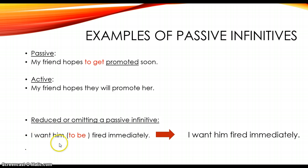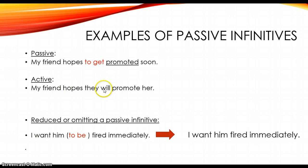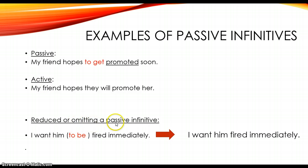I could say 'I want him to be fired immediately,' or I can omit 'to be' and say 'I want him fired immediately' — they have the same meaning. Passive infinitives are used to focus on the receiver of the action and not the performer. The performer is 'they,' like 'the company will promote her,' but I'm focusing on the receiver — my friend is receiving the promotion. That's the difference between passive and active infinitives, and I can reduce the passive infinitive by omitting 'to be.'